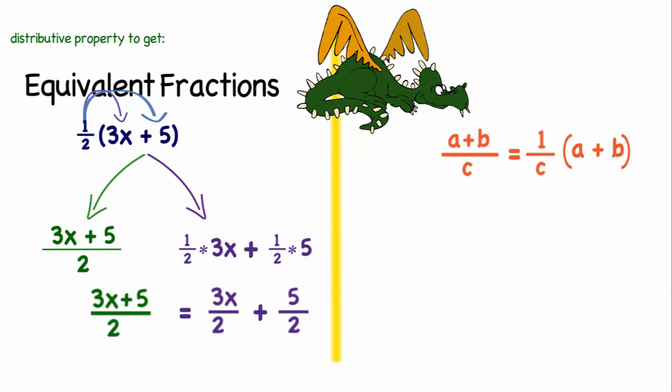So the next step is just apply my distributive property. So that would become 1 over c times a which gives me a over c plus 1 over c times b or b over c.